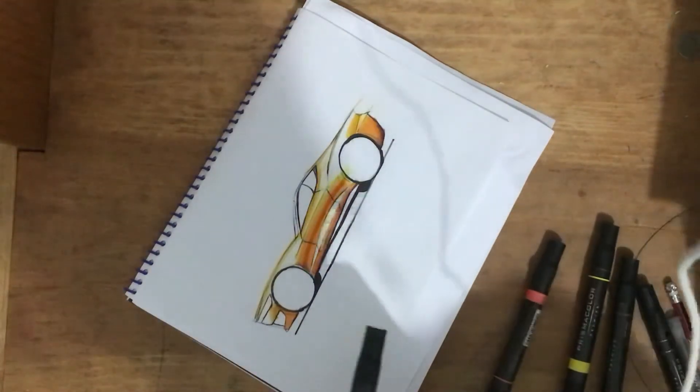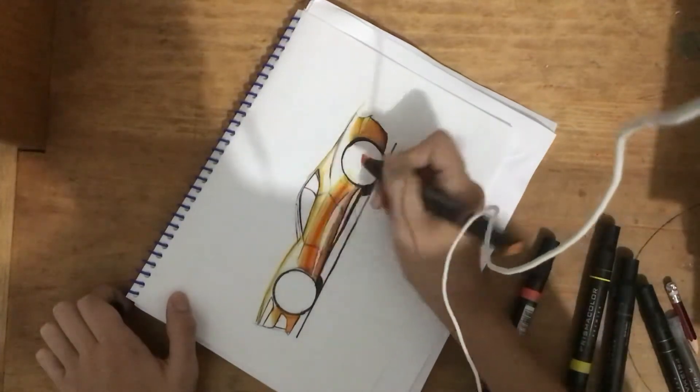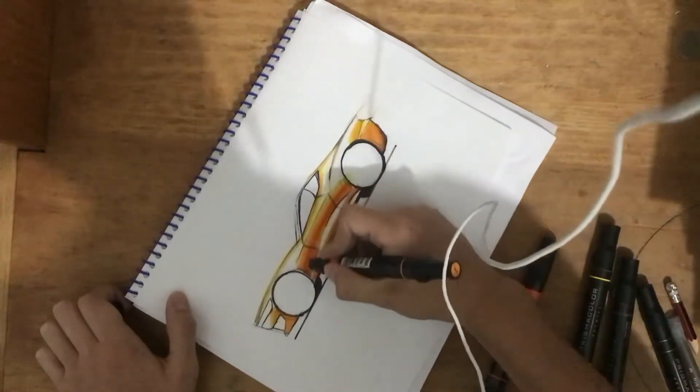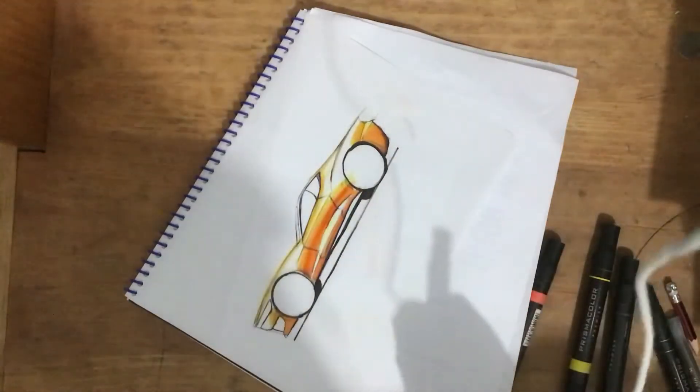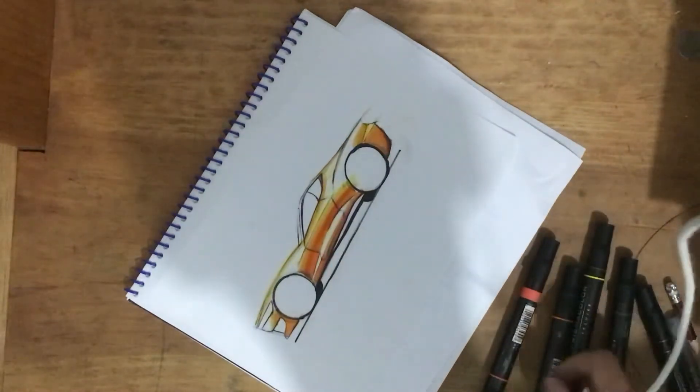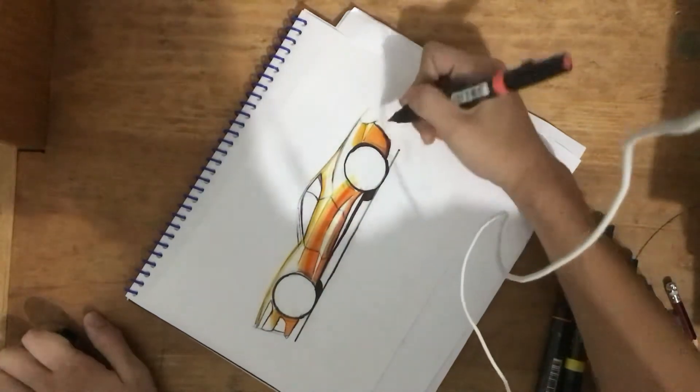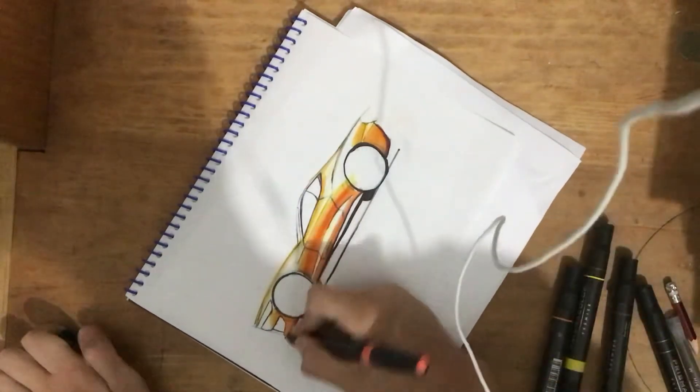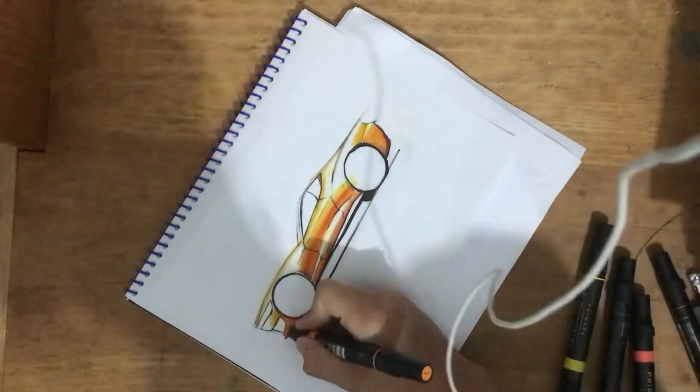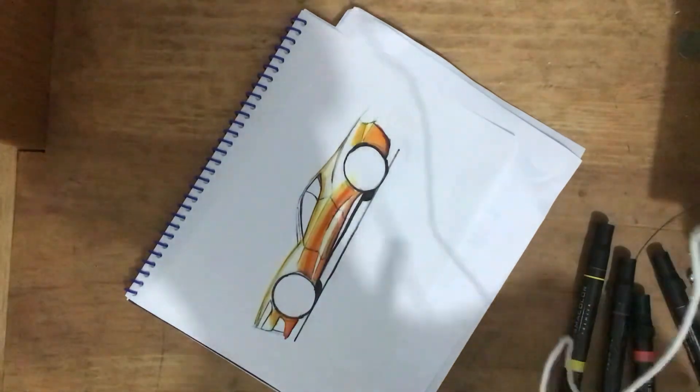So you can see I put in a bit of reflection there. Blend that in with my orange marker. Hmm this is looking a bit strange not gonna lie. Maybe it would have gone better with the lightest shade of brown possible.